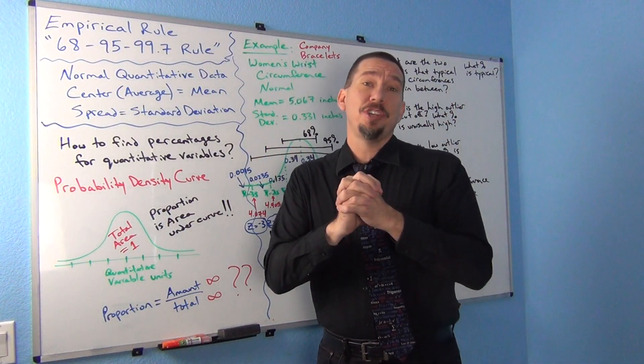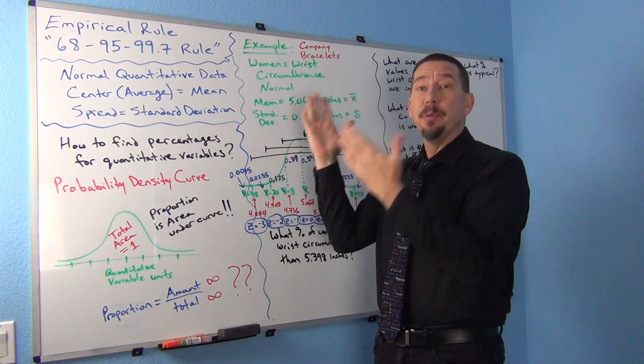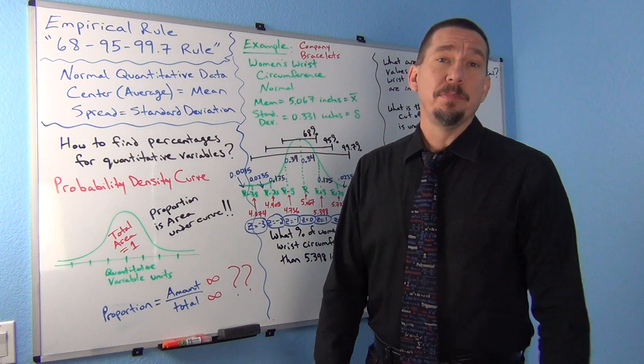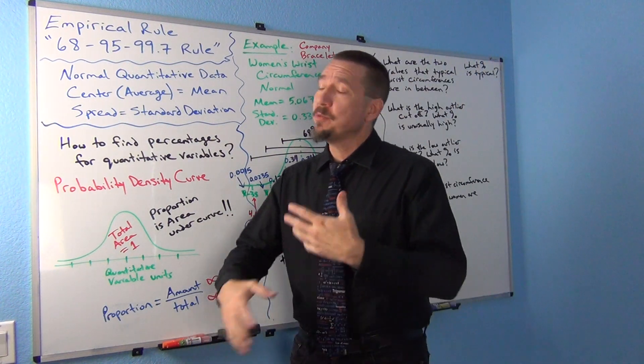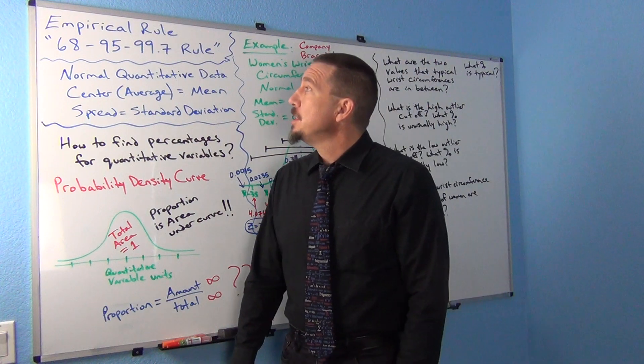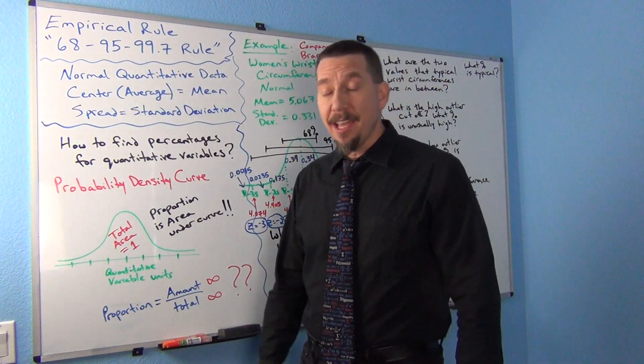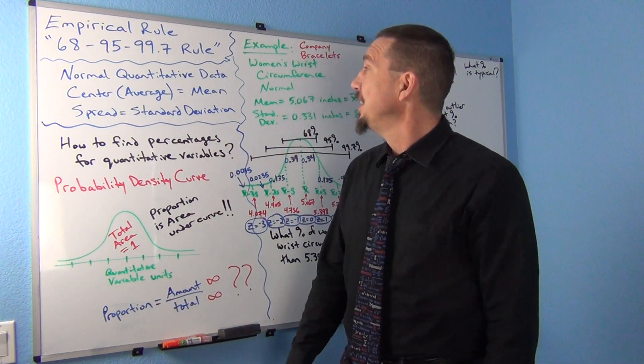Hi everyone, this is Matt Tuchot and intro stats and today we're looking at the empirical rule. The empirical rule, which is another famous rule about normal quantitative data, is also sometimes referred to as the 68, 95, 99.7 rule, which we'll talk about in a little bit.